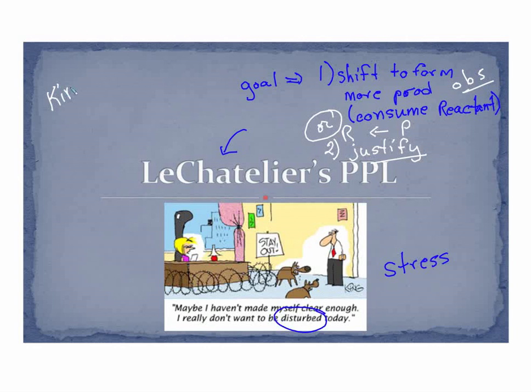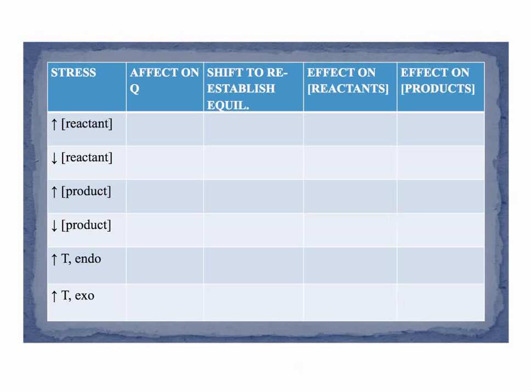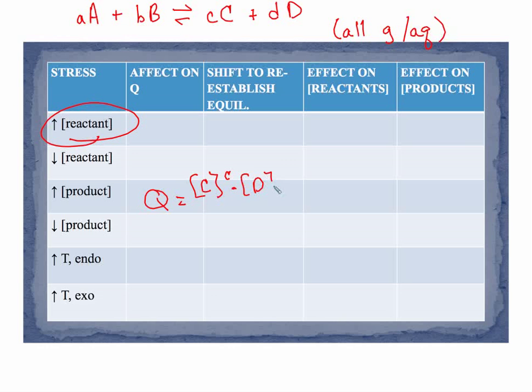To do that we want to appeal to one of two things: either kinetics or Q. This is really a key point where Q comes into play. Let's take a look at this first one and set up a generalized reaction: a moles of A plus b moles of B are in equilibrium with c moles of C plus d moles of D. Let's assume for now that these are all gases or aqueous. We won't worry about solids and liquids yet. If we do that we can set up Q, so Q would be the concentration of C raised to the c times D to the d over A to the a, you should know this by now, B to the b.